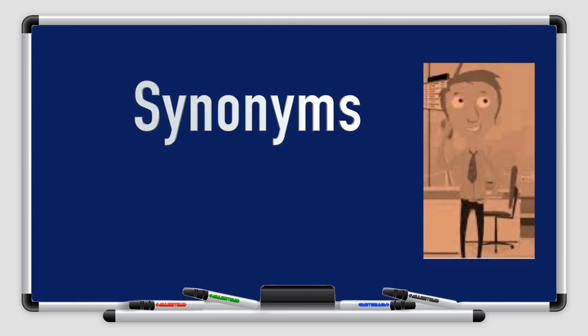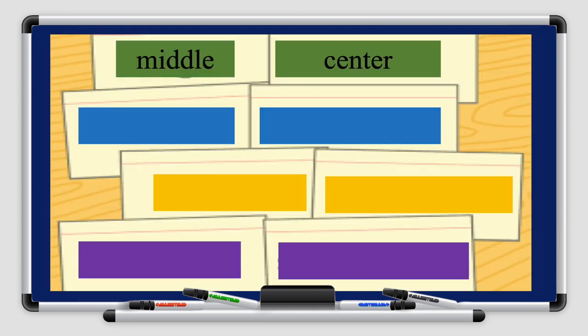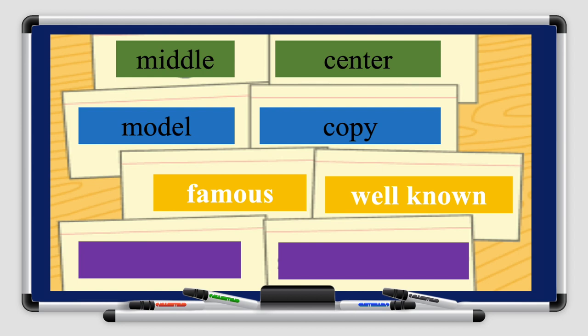Do you know what synonyms are? Synonyms are words with the same meaning or almost the same meaning. I'll give you some examples so you can understand better. The word 'middle' and 'center' are synonyms — they have the same meaning. Another example: 'model' and 'copy' also have the same meaning. Another example: 'famous' and 'well known.' The next example: 'old' and 'ancient.' So these words have the same meaning — they are synonyms.